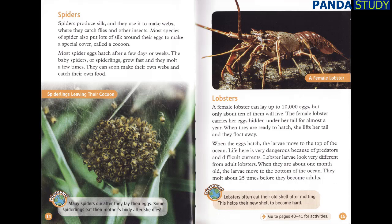Lobsters. A female lobster can lay up to 10,000 eggs, but only about 10 of them will live. The female lobster carries her eggs hidden under her tail for almost a year. When they are ready to hatch, she lifts her tail and they float away. When the eggs hatch, the larvae move to the top of the ocean. Life here is very dangerous because of predators and difficult currents. Lobster larvae look very different from adult lobsters. When they are about one month old, the larvae move to the bottom of the ocean. They molt about 25 times before they become adults.